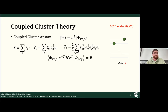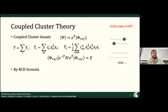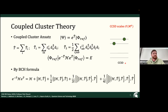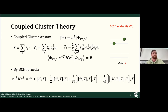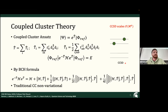To solve for the energy, we take the expectation value with the Hamiltonian. This gives us the similarity-transformed Hamiltonian. We can use the Baker-Campbell-Hausdorff formula to solve for this Hamiltonian — essentially it's the Hamiltonian with nested commutators of the cluster operator. For regular coupled cluster, the BCH formula truncates at fourth order, so we're able to solve this classically. The problem is that coupled cluster is non-variational, so we can't use it directly for the Variational Quantum Eigensolver.